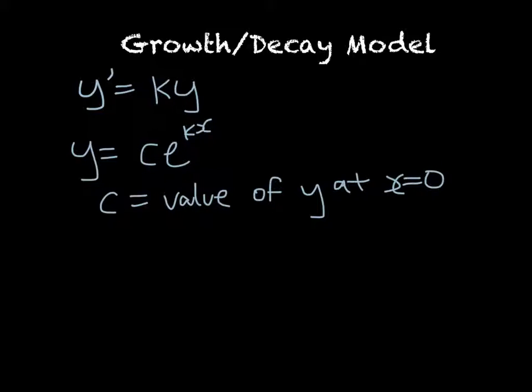So if we were talking about a population, then we could write out the model population at any given point in time is equal to the initial population times e to the power of kt, where t is the amount of time that's passed.